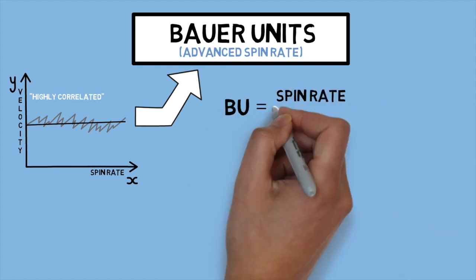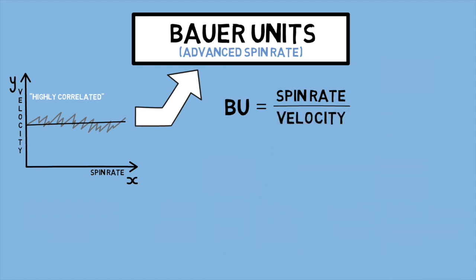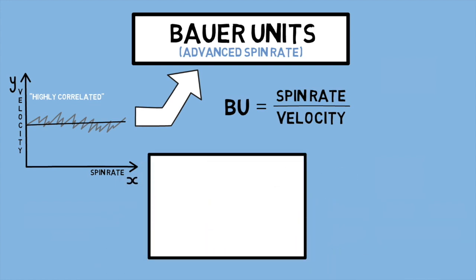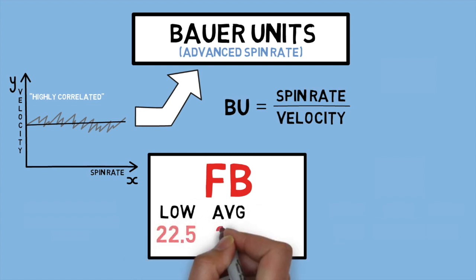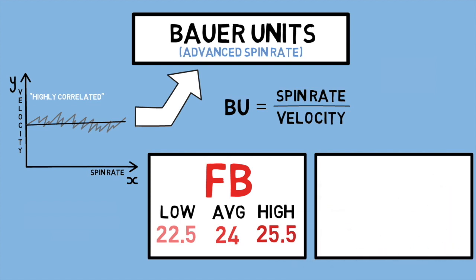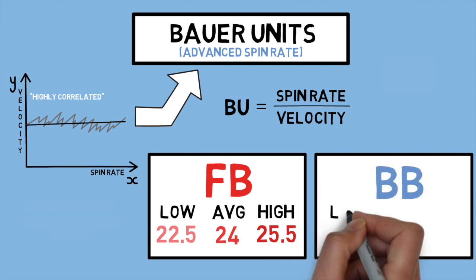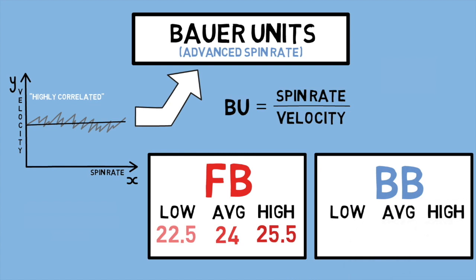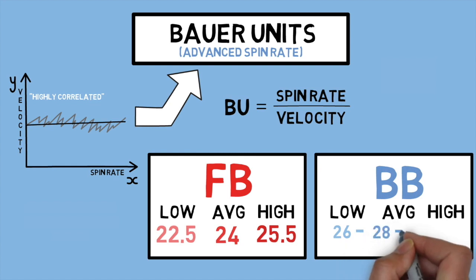I typically do this after a few bullpens or games to make sure you have an ample sample size. Once you have that calculated, you can see — for any age and velocity — where that pitcher stands with their spin. For fastballs, a low Bauer unit would be anything below 22.5. Average falls at around 24, and above average would be at that 25.5 mark. For breaking balls, these numbers are a little higher, because typically these pitches have higher spin and are thrown at a lower velocity. The lower Bauer unit breaking balls have numbers between 26 and 28, average between 28 and 30, and above average up to and surpassing 33.